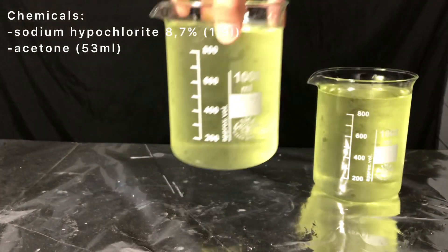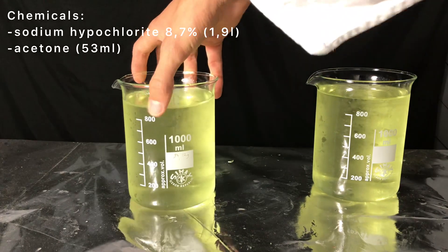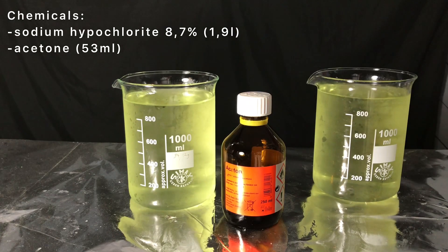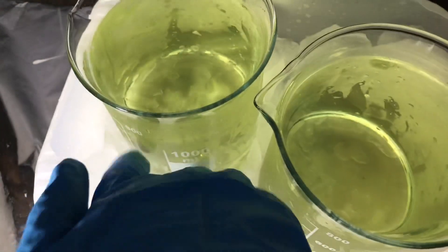Welcome back everyone. Today we are going to make chloroform. For this, 1.9 liters of 8.7% sodium hypochlorite solution and 53 milliliters of acetone are needed.